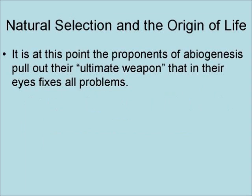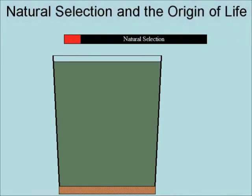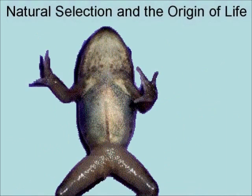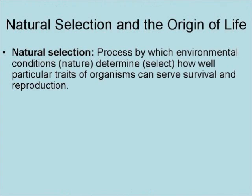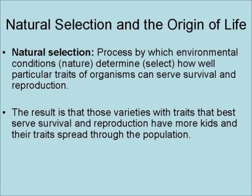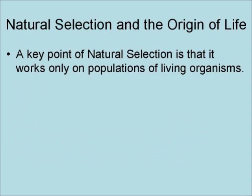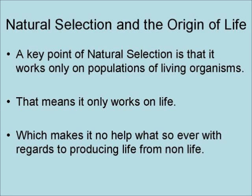It is at this point that proponents of abiogenesis pull out their ultimate weapon: natural selection. Natural selection is pulled out and waved over the problem like a magic wand, magically fixing all problems and eventually being able to turn frog nog back into a frog. Natural selection is the process by which environmental conditions determine — that is, select — how well particular traits of an organism serve survival and reproduction. Those variations with traits that best serve survival and reproduction have more offspring, and their traits spread throughout the population. A key point is that natural selection works only on populations of living organisms — it only works on life, making it no help whatsoever with producing life from non-life.